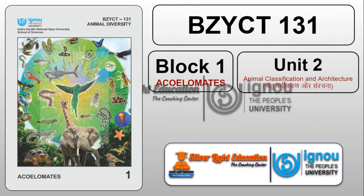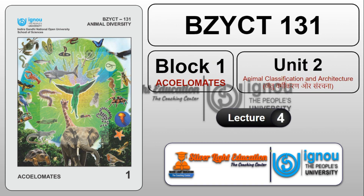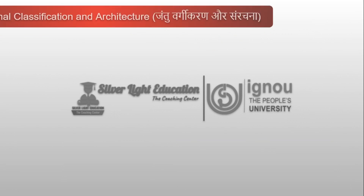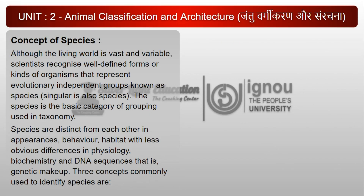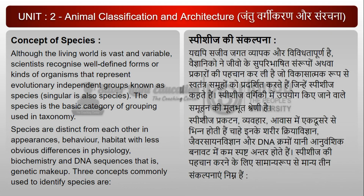BZEKT 131 Block 1 Unit 2: Animal Classification and Architecture — Jantu Vargikaran or Sanrachana. Concept of Species: Although the living world is vast and variable, scientists recognize well-defined forms or kinds of organisms that represent evolutionarily independent groups known as species (singular: species). The species is the basic category of grouping used in taxonomy. Species are distinct from each other in appearances, behavior, habitat, with less obvious differences in physiology, biochemistry, and DNA sequences, i.e., genetic makeup. Three concepts commonly used to identify species are: